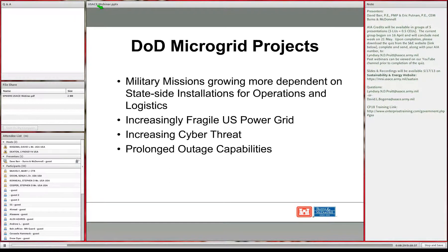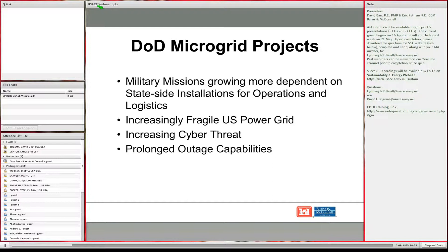Most diesel generators on buildings are installed with the assumption that utility power may be lost for an hour or up to eight hours, with fuel tanks sometimes sized for 72 hours. But a building critical in a four-hour outage remains critical after a four-week outage. After Hurricane Sandy, some Northeast installations were without power for up to two weeks—if those missions were supporting contingency operations overseas, that would have compromised national security.